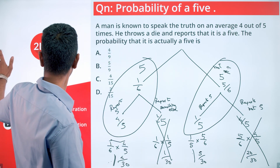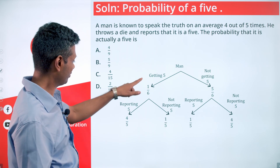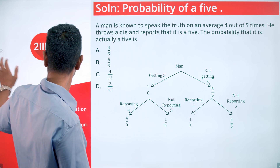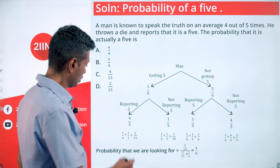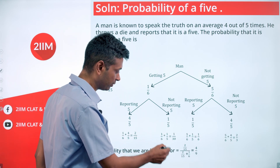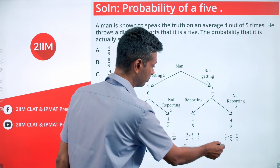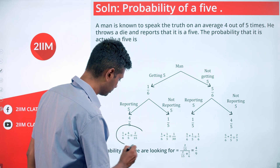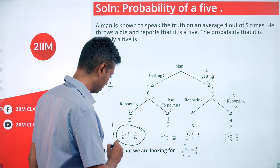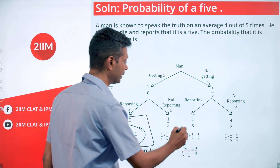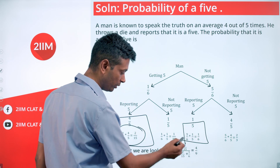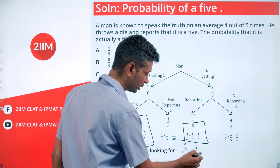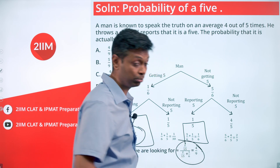Given you have reached the destination of reporting five, the denominator is 4/30 + 5/30 and the numerator is 4/30. Working through: 1/6 × 4/5, 1/6 × 1/5, 5/6 × 1/5, 5/6 × 4/5. The path 'it was five and reported five' is 1/6 × 4/5 = 2/15. The probability is (2/15) divided by (2/15 + 1/6), which equals 4/30 divided by 9/30, giving 4/9.